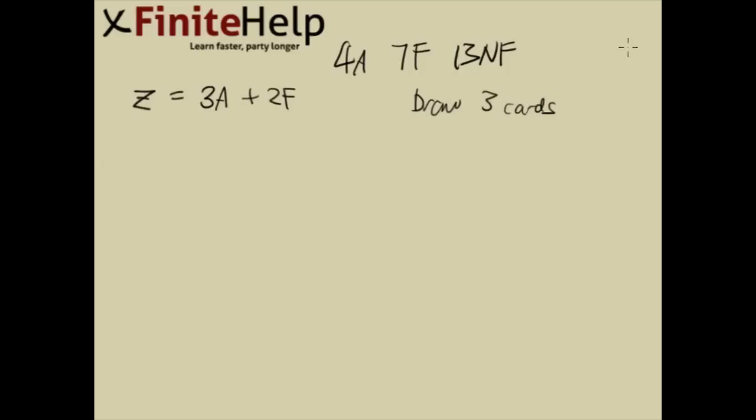This is a random variable problem that requires you to list out all the outcomes. Here we have Z defined as 3 times the number of aces you draw and 2 times the number of face cards you draw out of the 3 cards that you draw.